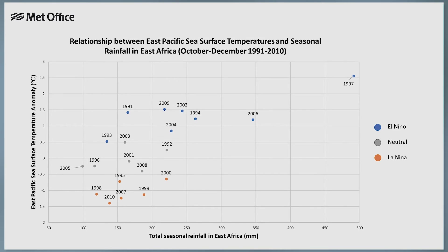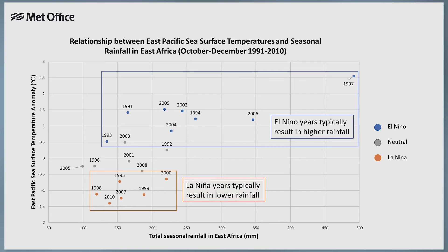By knowing the current sea surface temperatures and using that identified relationship, we can forecast the future conditions. This figure compares seasonal rainfall totals over East Africa with sea surface temperatures in the East Pacific over the past 20 years. The data shows that, in general, higher temperatures in the East Pacific, as occurred during El Niño events, are usually associated with higher rainfall amounts over East Africa. This statistical relationship allows us to make seasonal forecasts over this region, although other sea surface temperature drivers in the Indian Ocean can also be important to consider.